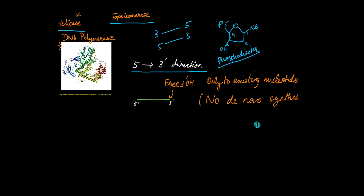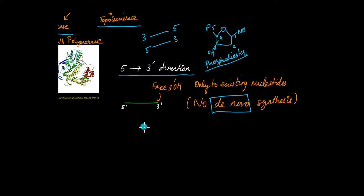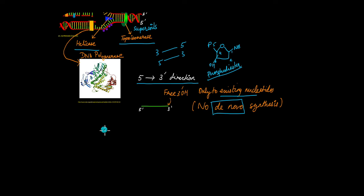DNA polymerase also has another limitation: it can add new nucleotides only to existing nucleotides, meaning it cannot perform de novo synthesis of DNA. But DNA polymerase is what synthesizes the new strand — so from where does it get these existing nucleotides? You can think of it like a car that needs a push to start. DNA polymerase also needs a push to start synthesizing the new strand of DNA, and we will learn about that shortly.